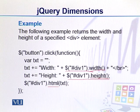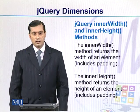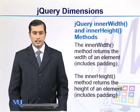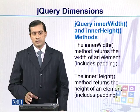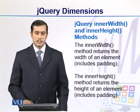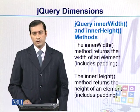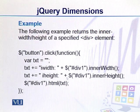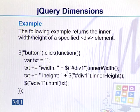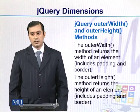Using innerWidth and innerHeight, we can select an element's height or width including its padding. The return value includes padding as part of the CSS size. In this example, we select an element by ID — div1 — and the innerWidth and innerHeight are displayed using jQuery.